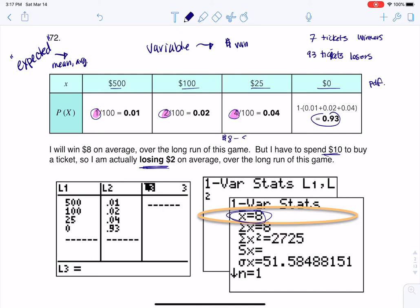You win $8, but you lose the $10 to buy the ticket. So really, you're losing $2 on average overall. And that's how you do 72. All right, thanks so much, everyone. Bye.